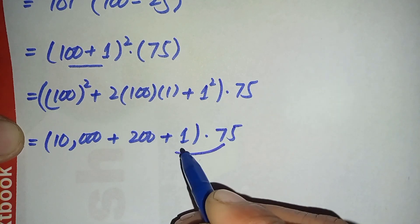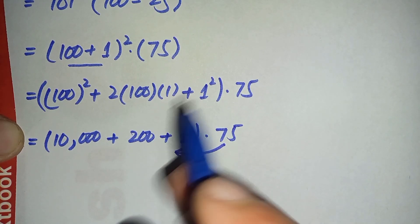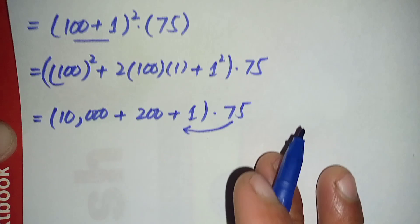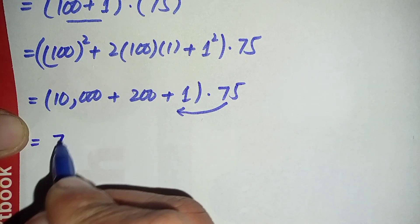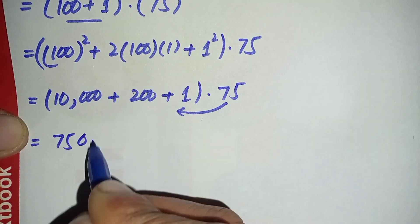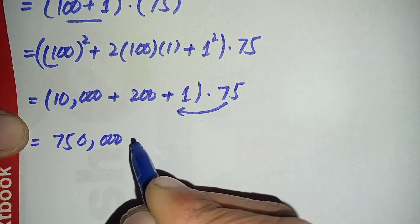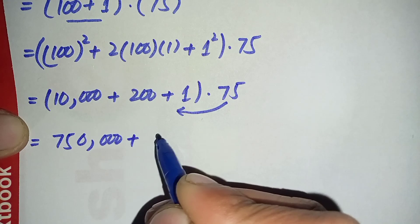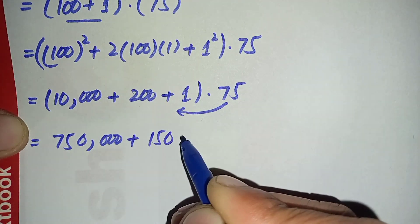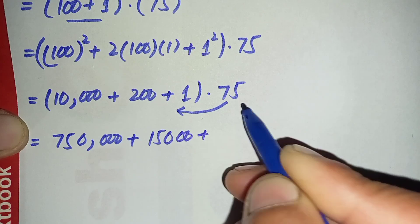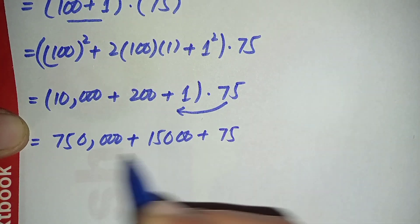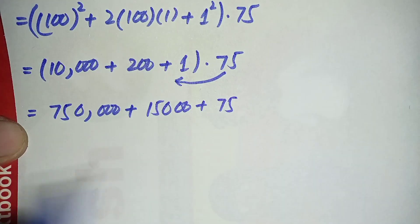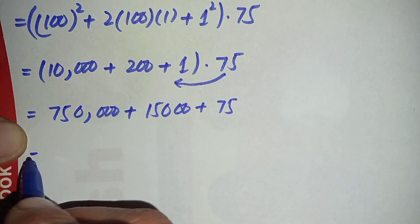So this equation will become 75 times 10,000 is 750,000 plus 75 times 200 is 15,000 plus 75 times 1 is 75.